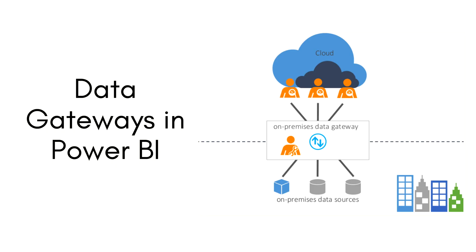As you can see on my screen, it's a structure of the Power BI data gateway. The on-premise data gateway sits between your on-premise data sources and your cloud applications. Power BI service is a cloud application, and in order to connect with your on-premise data sources, there should be a link or bridge between these two. Otherwise, Power BI service cannot refresh your data. So in order to create that link, we need the Power BI data gateway.